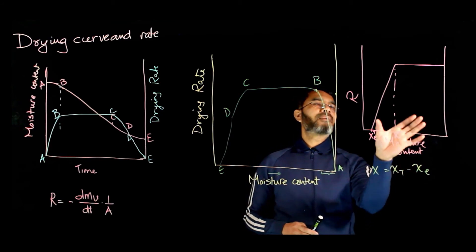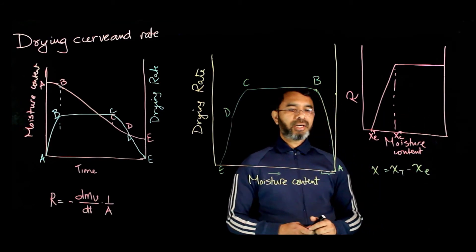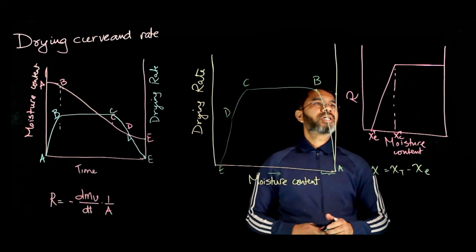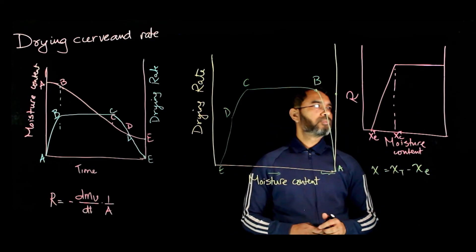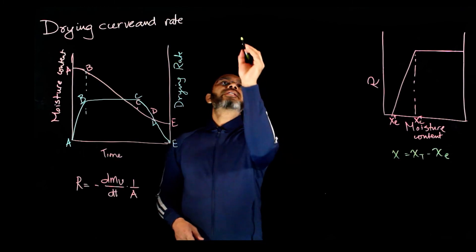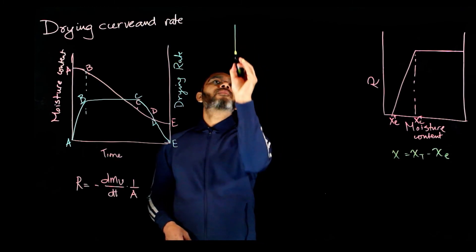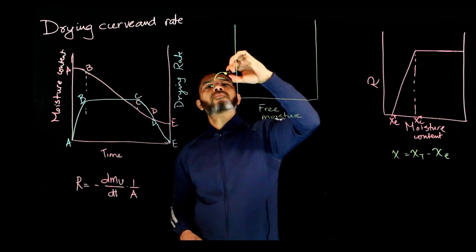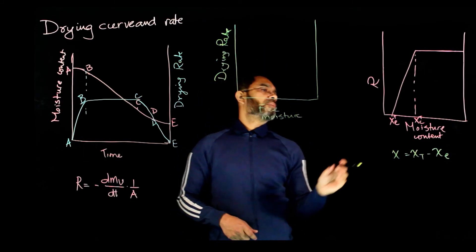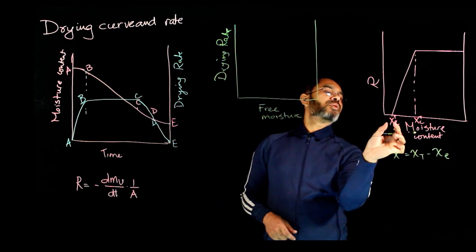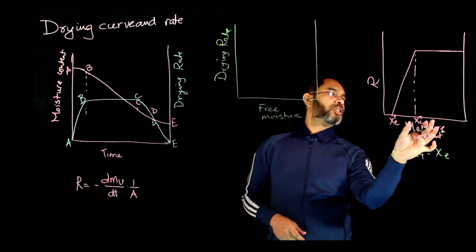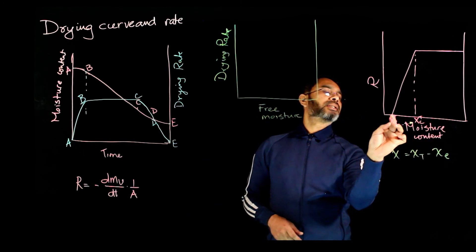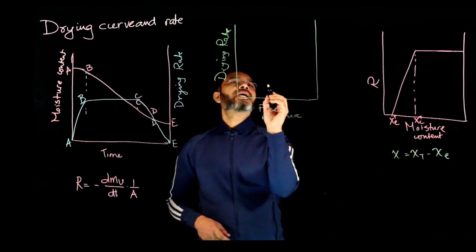If we express this curve in terms of free moisture instead of total moisture, what will it look like? To plot in terms of free moisture, we simply subtract the X_E value from the total moisture. The curve will just shift, and then we will have this new representation.